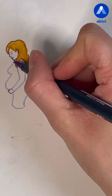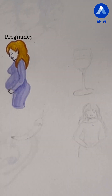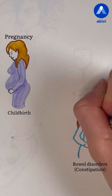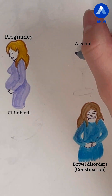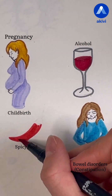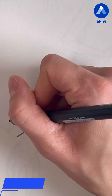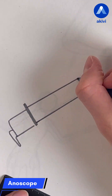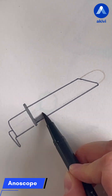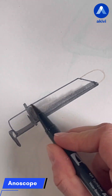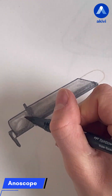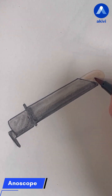Hemorrhoidal disease can be triggered or worsened by pregnancy, childbirth, bowel transit disorders, and consumption of alcohol or spicy food. Diagnosis is primarily clinical, based on visual examination of the perianal area and anoscopy to assess the internal hemorrhoids.